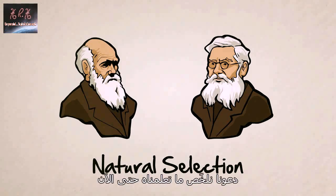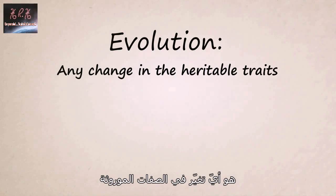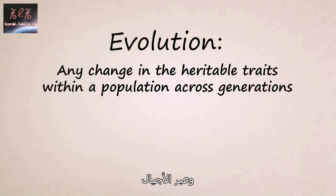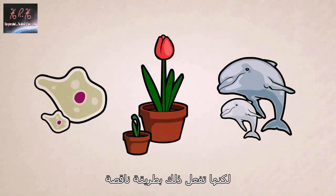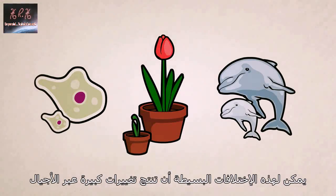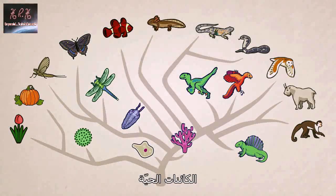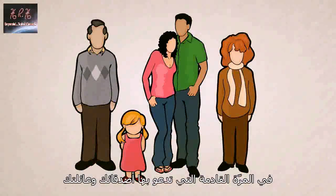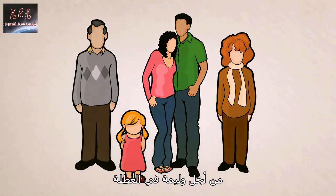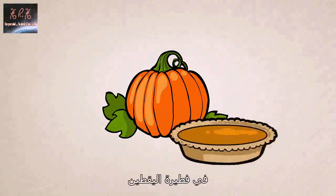But before you move on, let's recap what we've learned so far. Biological evolution is any change in the heritable traits within a population across generations. All healthy living things can make copies of themselves, but they do so imperfectly. Small variations can add up over generations to create dramatic differences in the body form and function of living creatures. Evidence overwhelmingly suggests that all life on Earth is related. So remember, next time you invite family and friends over for a holiday feast, you're actually just inviting family — that includes the turkey and the pumpkin in the pumpkin pie.